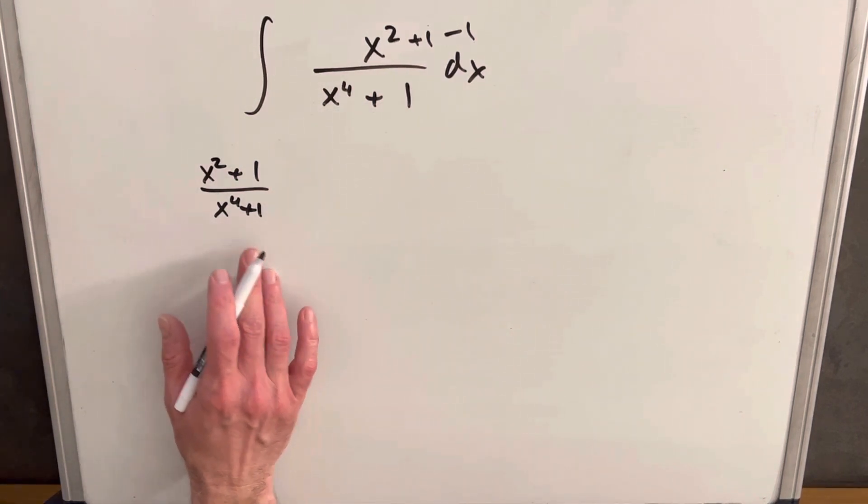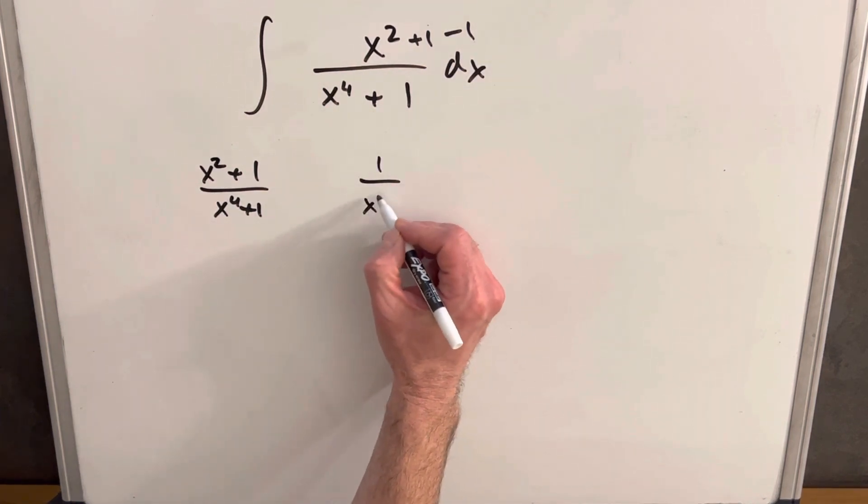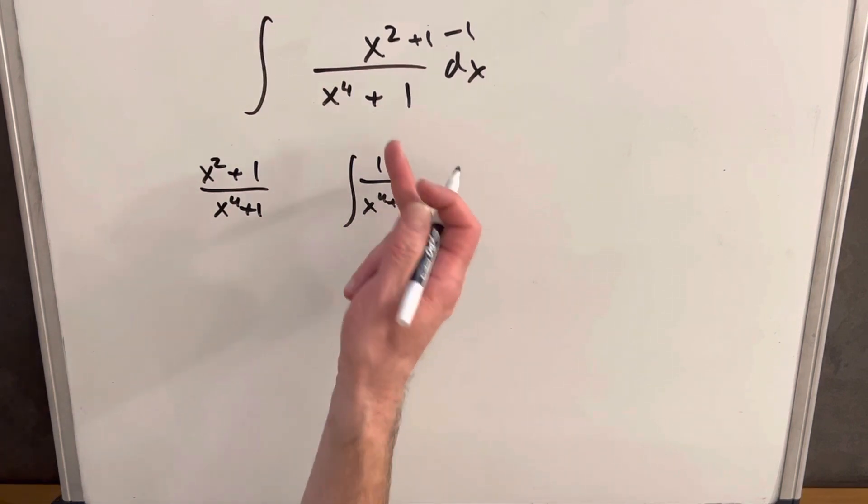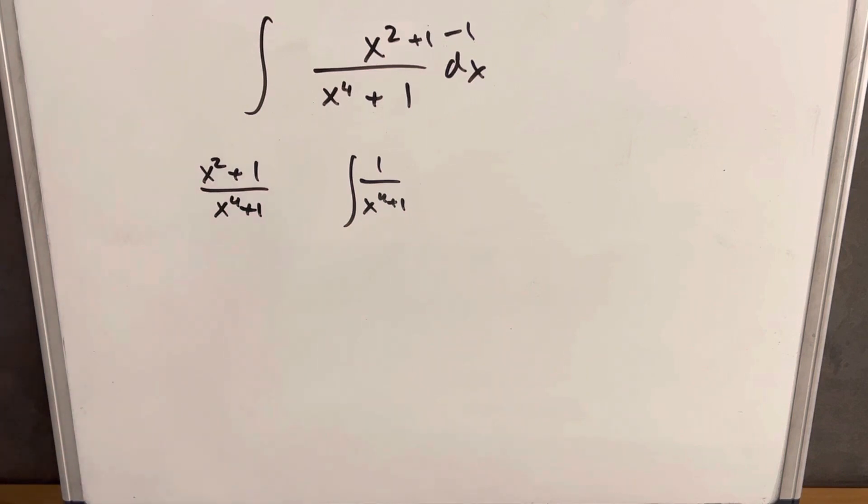We could create that by adding a 1 and subtracting a 1, then split this up. The only problem is we'd be left with 1 over x to the fourth plus 1, and that's actually not any easier than this. We'd still be in the same predicament, so this strategy is not quite doing it for me.